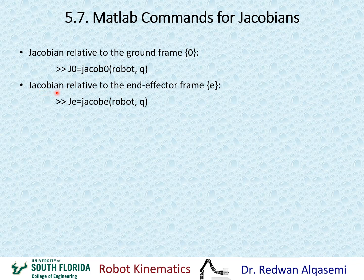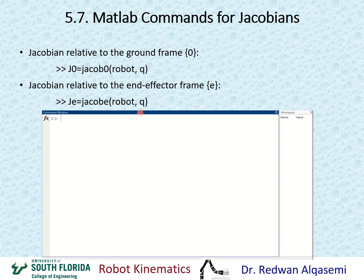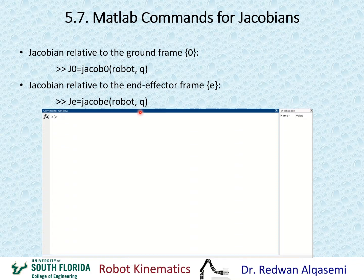Another command computes the Jacobian relative to the end-effector frame E. The syntax is: your variable equals JacobE(robot, q), where the robot name is defined earlier and q is a column vector of joint angles for the robot. Let's look at the command window to see how this is typed and what results we get.